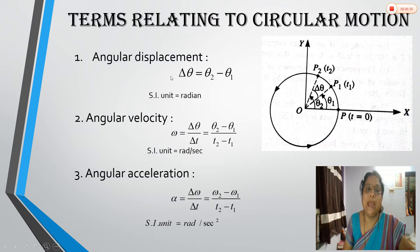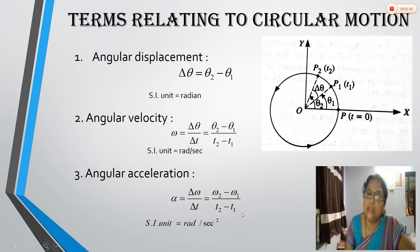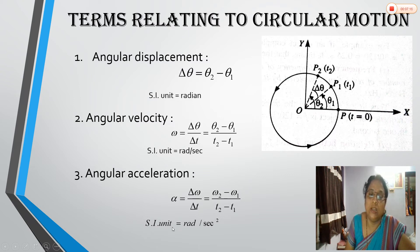Since angular displacement is an angle, its unit is radians, and angular velocity is radians per second. The third term is angular acceleration, denoted by alpha. It is the rate of change of angular velocity. If angular velocity is ω1 at time t1 and ω2 at time t2, then angular acceleration α = (ω2 − ω1) / (t2 − t1). The SI unit for angular acceleration is radians per second squared. The directions of angular displacement, velocity, and acceleration will be explained in the next session.